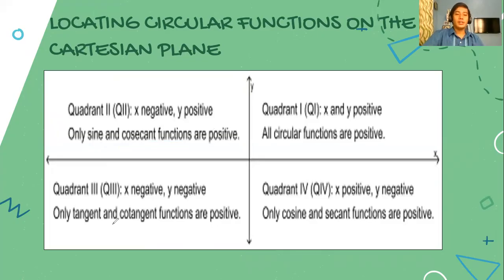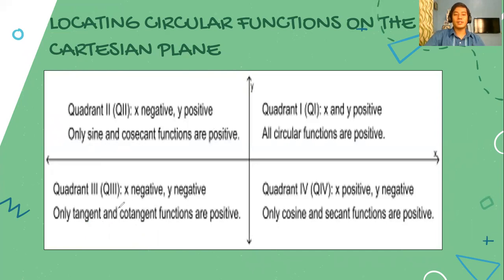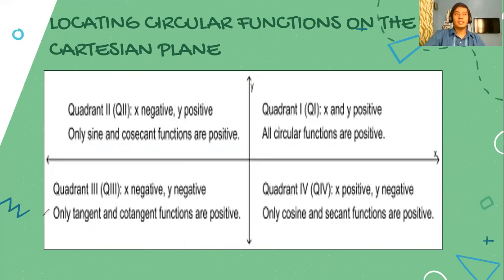For the third quadrant, x is negative and the y value is also negative for every trigonometric point P. So the sine is negative and the cosine is also negative. But there is one function which is positive — it is the tangent function. Of course, it follows that the cotangent function will also be positive. So in the third quadrant, sine, cosecant, secant, and cosine are negative, but only the tangent and the cotangent are positive.